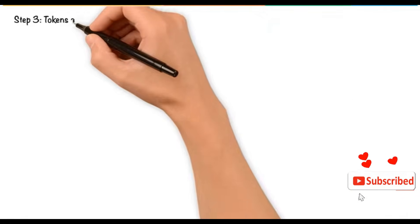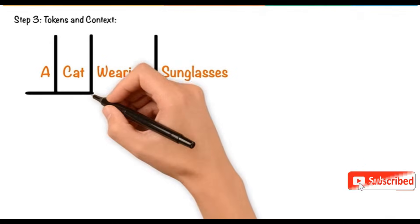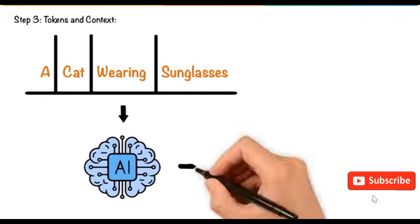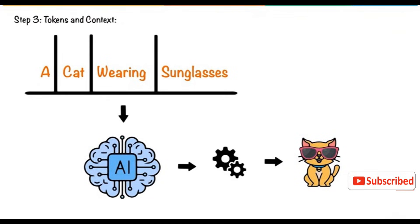Tokens and Context: The text input, such as a cat wearing sunglasses, is split into smaller parts called tokens. The AI processes each token and understands their relationship. For instance, it knows the sunglasses should be placed on the cat, creating a contextually accurate image.